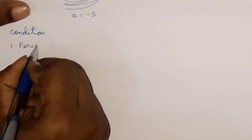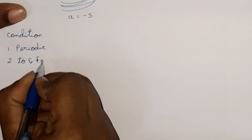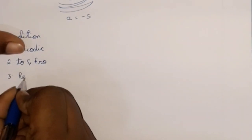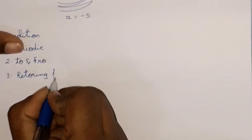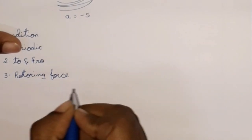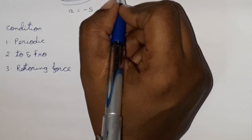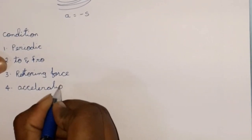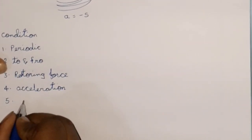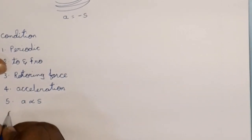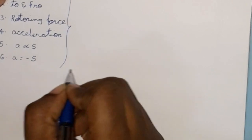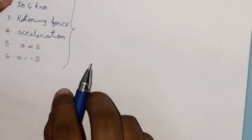The conditions for simple harmonic motion are: the motion should be periodic, the body should move to and fro, the restoring force — which is the force that develops inside the body — must be directed towards the mean position, and acceleration must be directed towards the mean position and proportional to displacement, always opposite to the displacement.